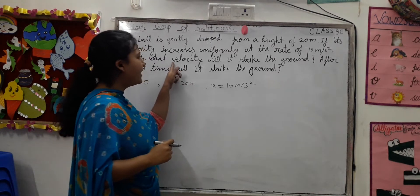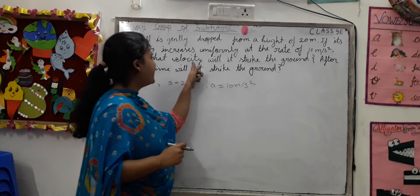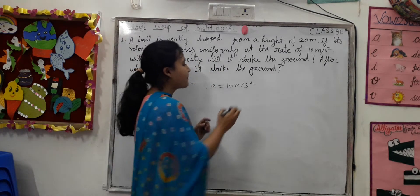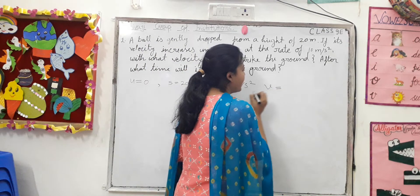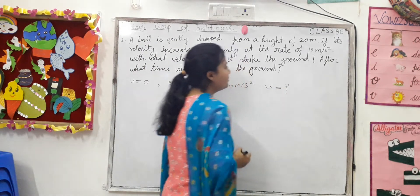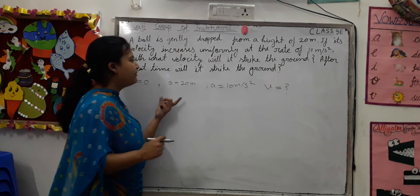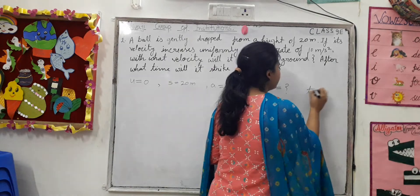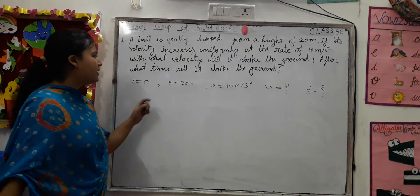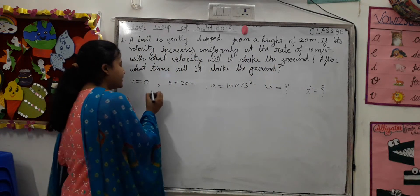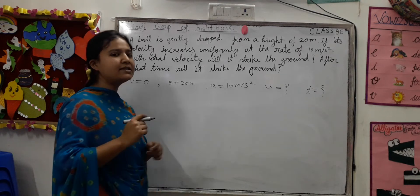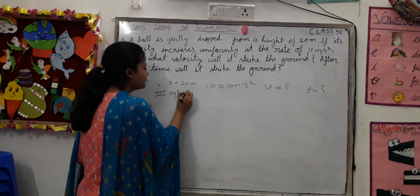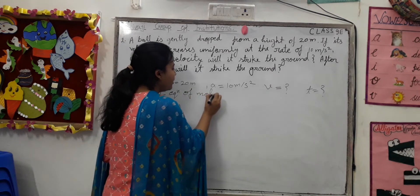We have to find the final velocity of the ball when it strikes the ground — that is, v is equal to what? After that, we will find the time taken to strike the ground — t is equal to what? Now we are using the third equation of motion.